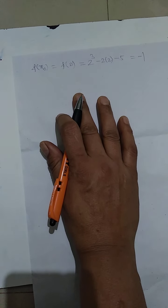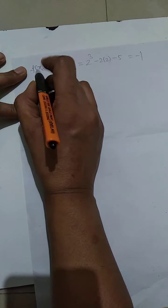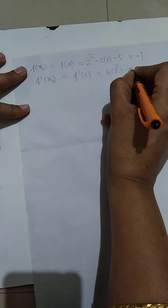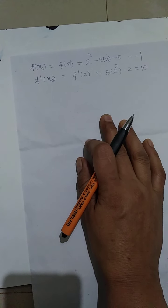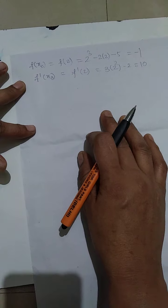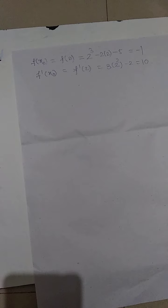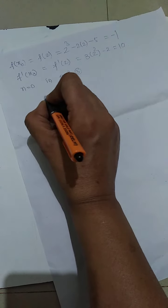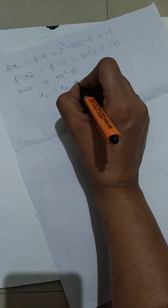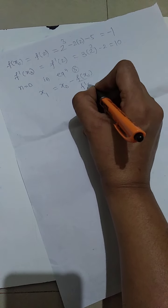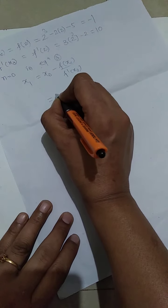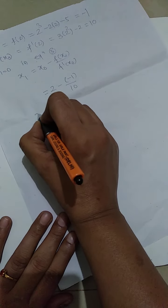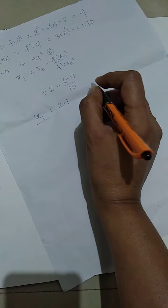Here x₀ is chosen, so we get a negative value of the function. f'(x₀) = f'(2) = 3(2²) - 2 = 10. Taking n = 0 in the Newton-Raphson formula, x₁ = x₀ - f(x₀)/f'(x₀) = 2 - (-1)/10 = 2.1.